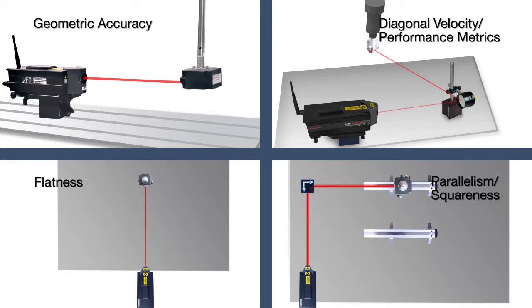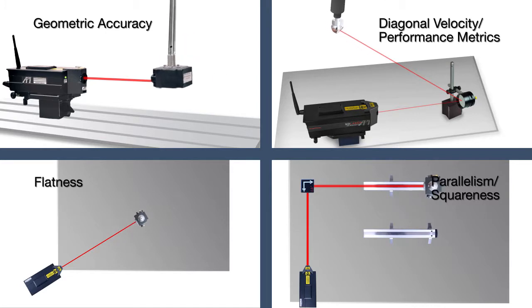With one XD, you can measure for geometric accuracy, diagonal velocity and performance metrics, flatness, parallelism and squareness, and more.